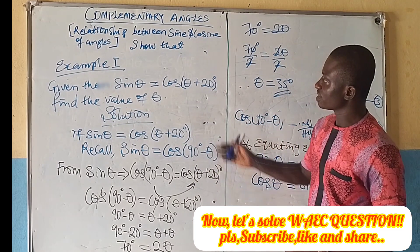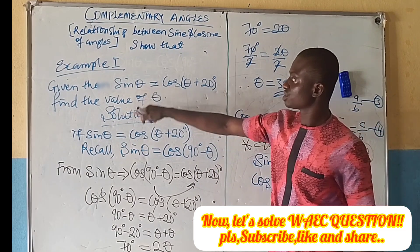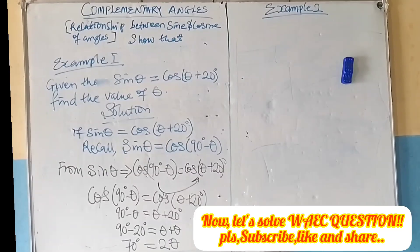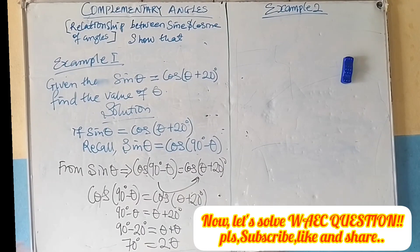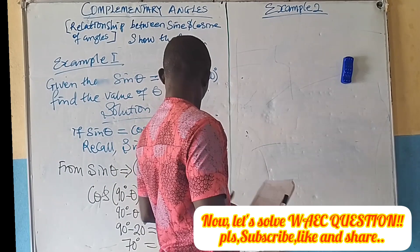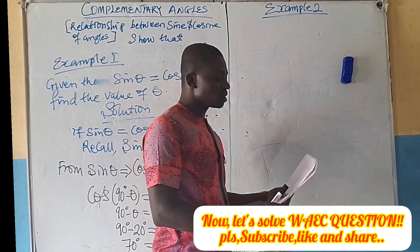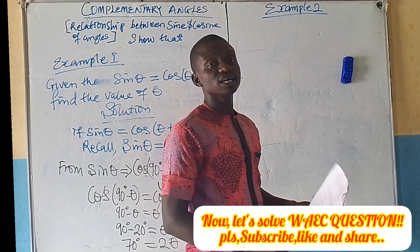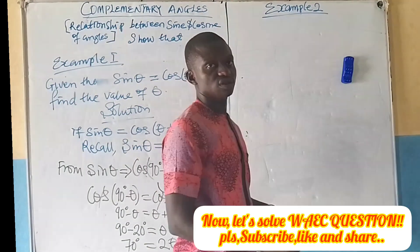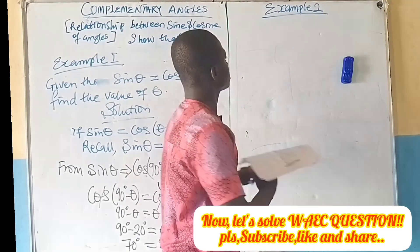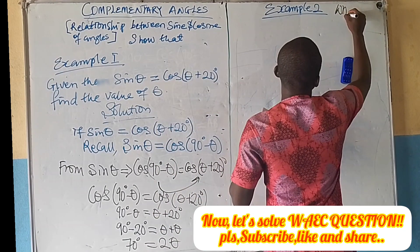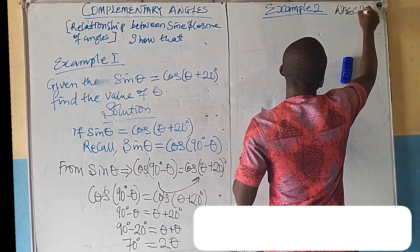You can check with your calculator: sin 35° equals cos(35° + 20°) = cos 55°, and they give the same value. This confirms the relationship between sine and cosine of complementary angles. Now we are going to solve a WAEC 2023 exam question pertaining to this topic.